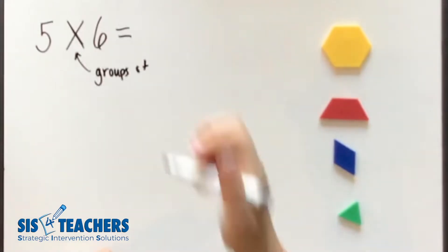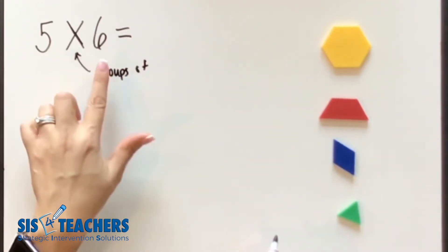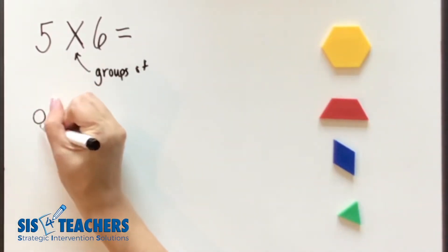So if we look at five groups of six, we know that if we made an array of five groups of six, it would look one way. If we changed it around to make it six groups of five, it would still be the total of 30, but the groups would look differently. Let's talk about it in a higher number.